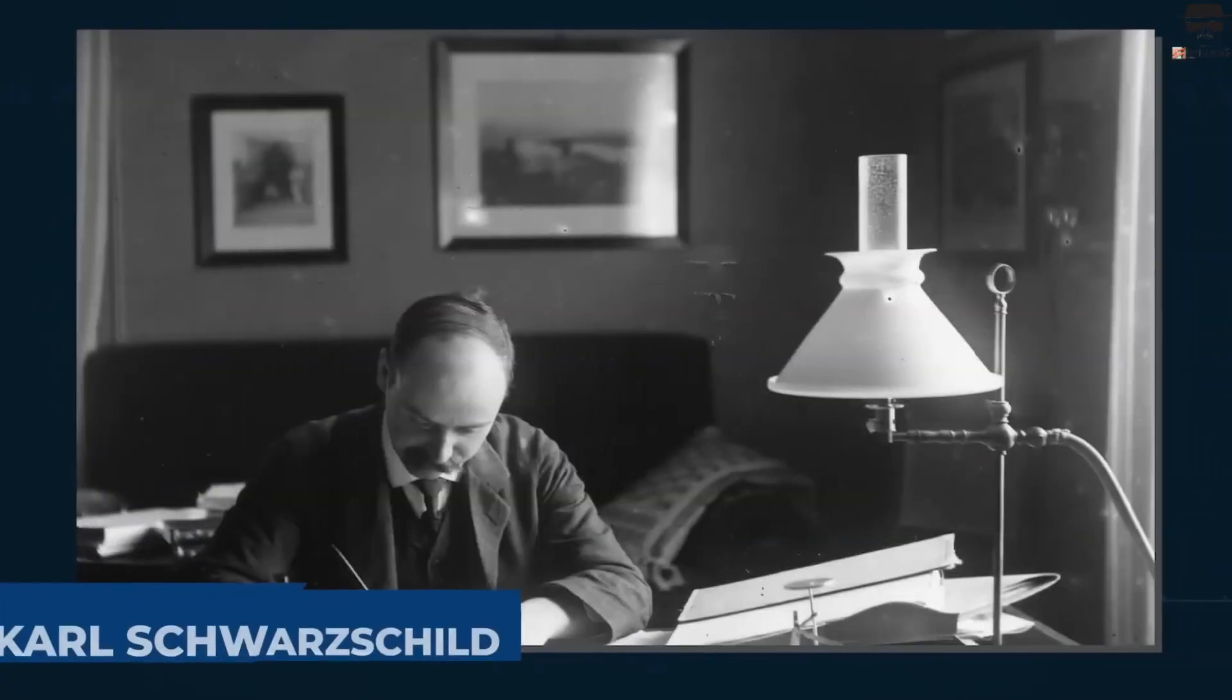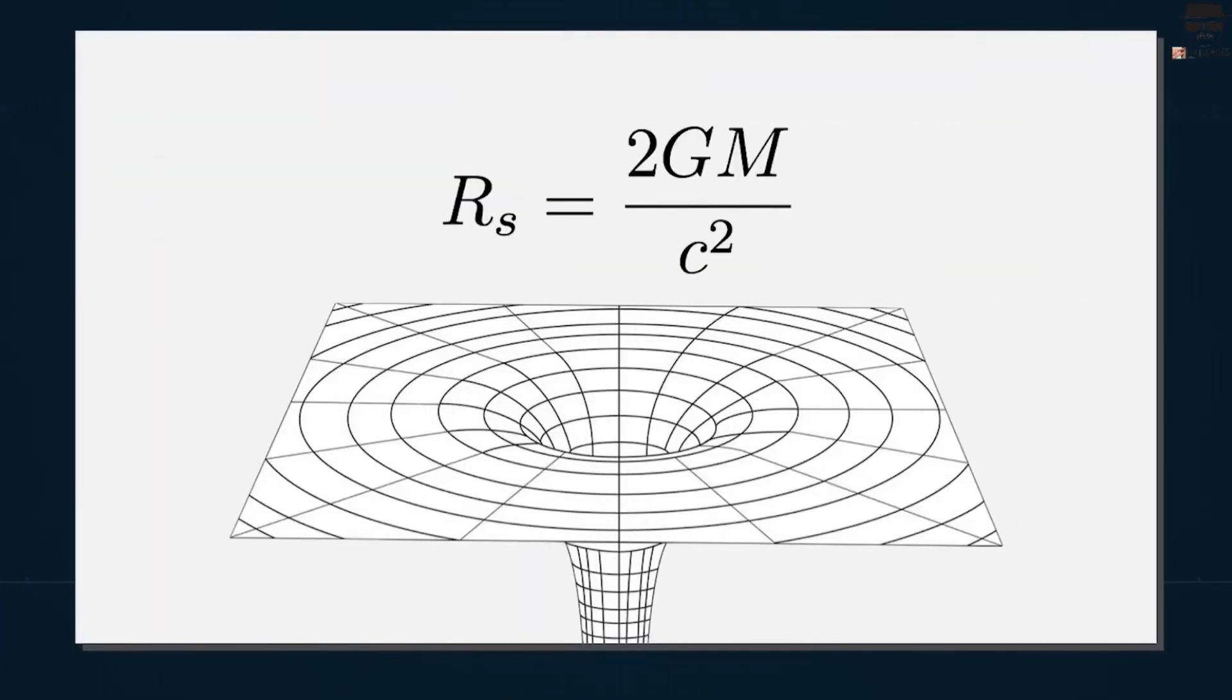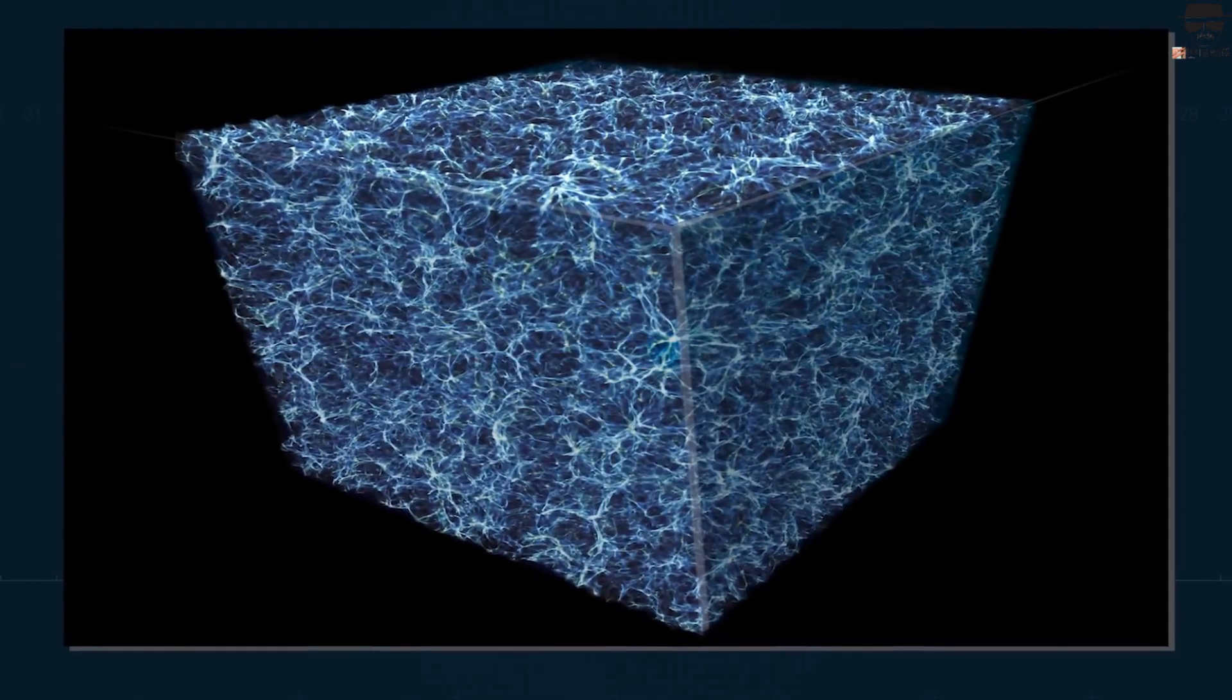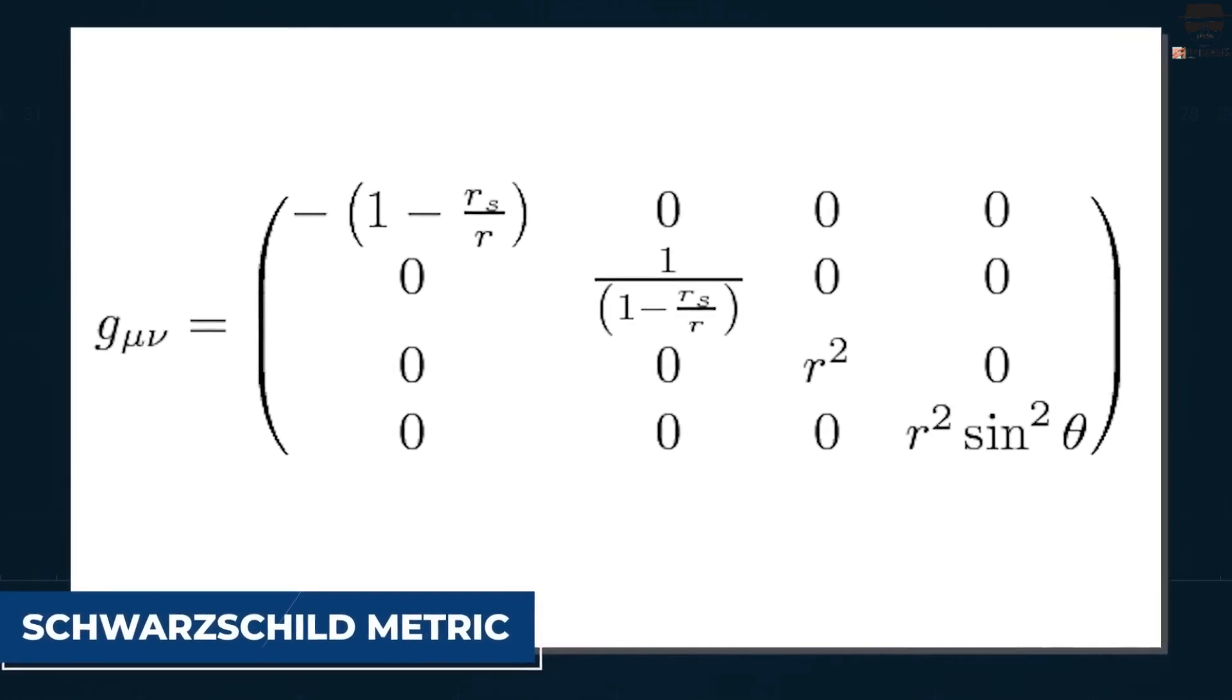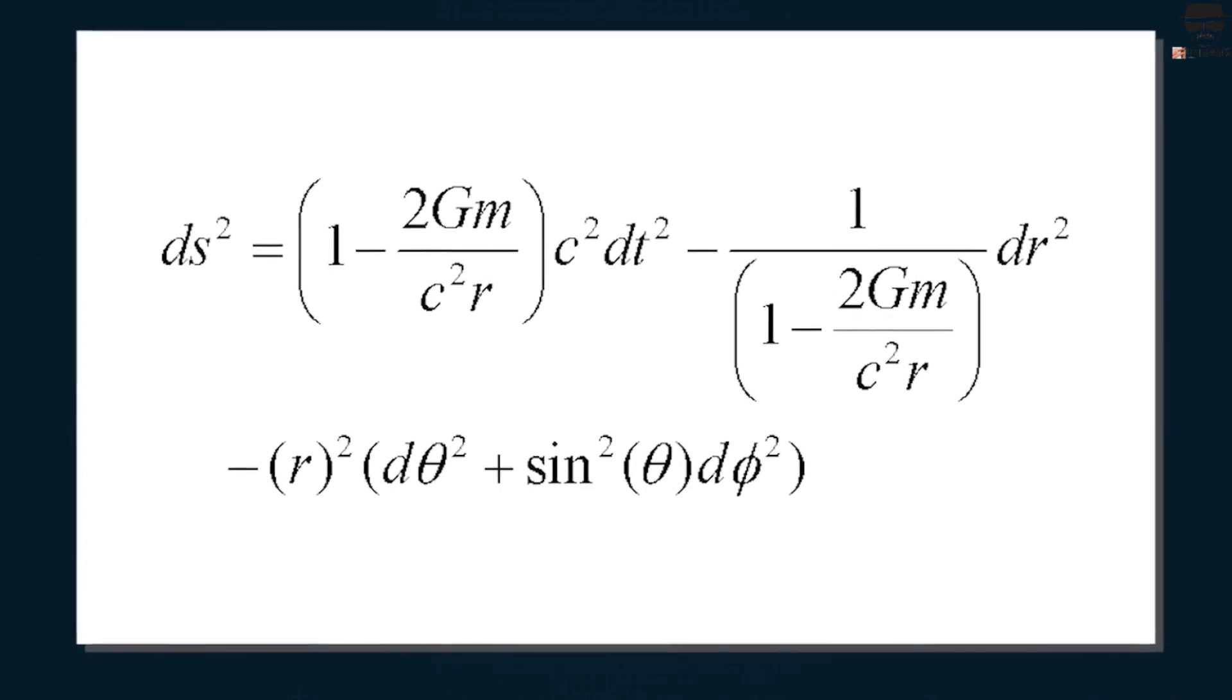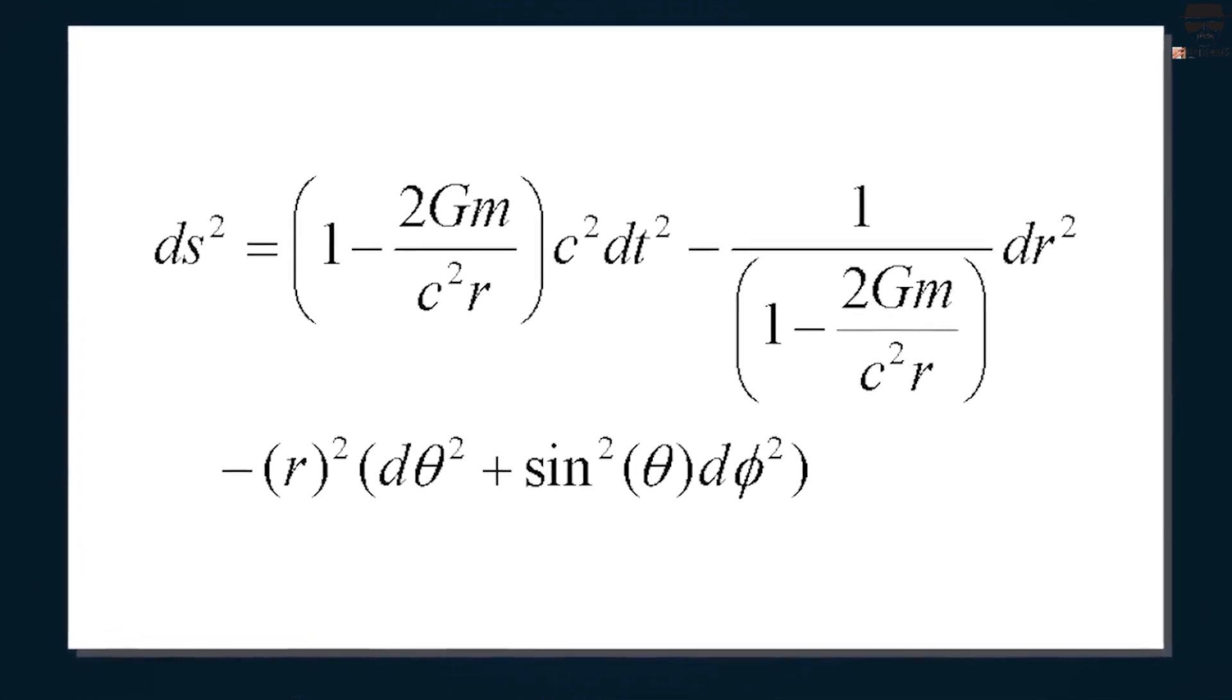Carl Schwarzschild would then use Einstein's field equations, solving them to find the equation of mass in empty space-time or an area completely void of all matter. This resulted in the Schwarzschild metric, which we will spare you as the equation itself is incredibly complex, but in simple terms, it is a mathematical representation of a black hole.